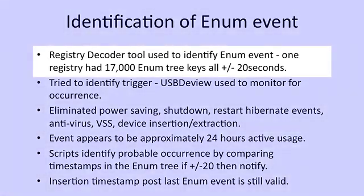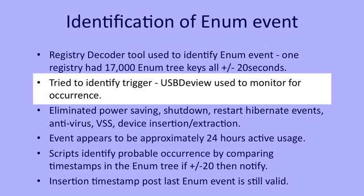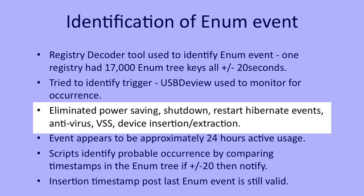I went about trying to find out more about this event — what possible causes it could have and how I could record it happening. I used a product called Registry Decoder to evaluate the enum trees for the hive samples I had. One hive sample had 17,000 different keys in it, and within the enum tree all had been updated with the same timestamp of plus or minus 20 seconds all the way through. I then used a product called USBDeView to observe or even trigger this event. I witnessed the enum tree update occurring and knew what I was doing on the system at the time. It was not a power saving event, shutdown, restart, hibernate, antivirus run, volume shadow, or insertion or extraction of a device.